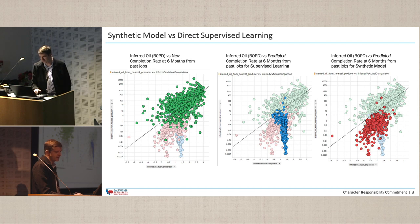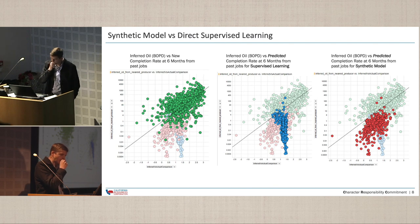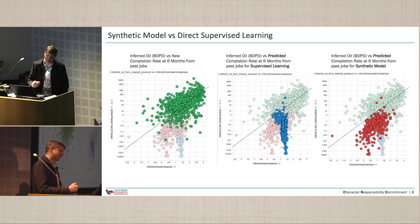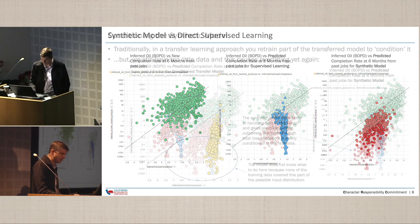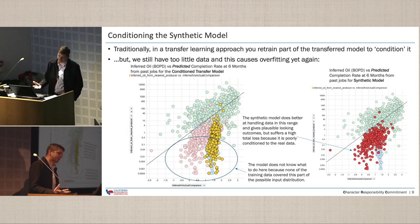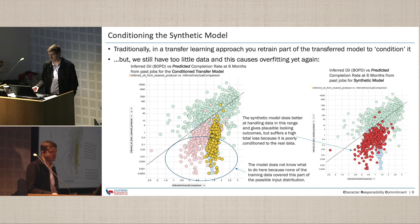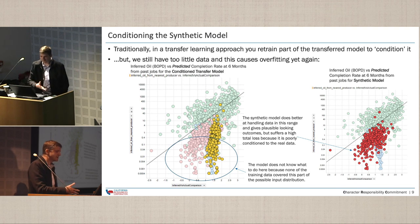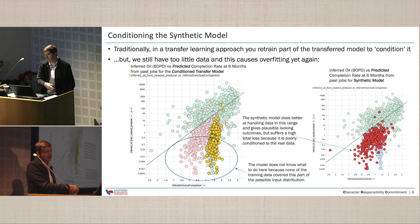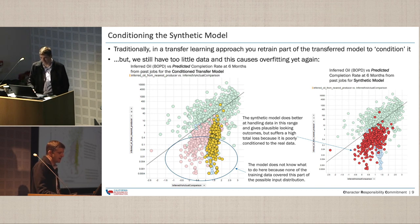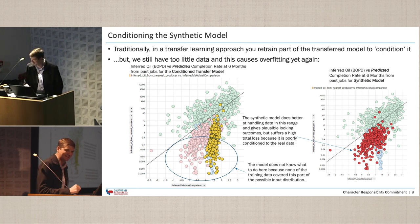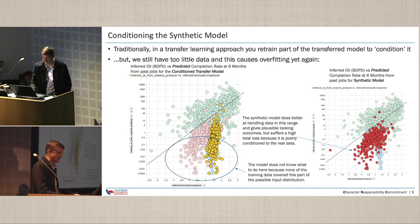The synthetic model generated the red cloud on the predictions for the same data. It's interesting — it maintains the trend, but it's kind of off. The red dots honored the trend of the data but didn't quite match up with the real data's trend. This led me to say the model must be getting something right because it has the same trend, but it's just not conditioned. Something is off. This is a common thing with transfer learning on images too — you usually pull off a couple of layers and try to condition the network. I tried that, just pulling off some layers and conditioning, and it overfit immediately.